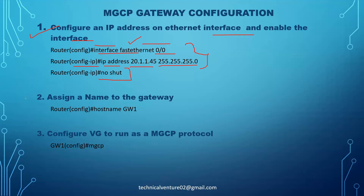The next step is to assign a unique name to the gateway. You can give the name using 'hostname GW1' — GW1 means Gateway One. When you give this name to the gateway, it changes the configuration prompt to 'GW1(config)'. You need to give the same name on your CUCM as well. The third step is to configure the voice gateway to run as an MGCP protocol. You just need to put the command 'mgcp' so that your voice gateway will run MGCP protocol.